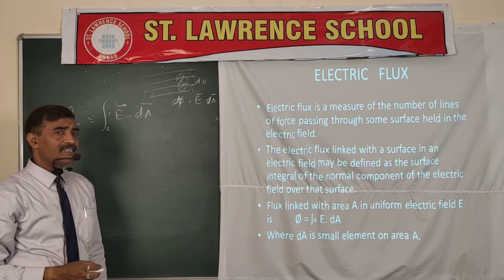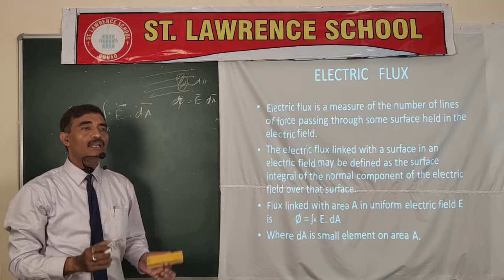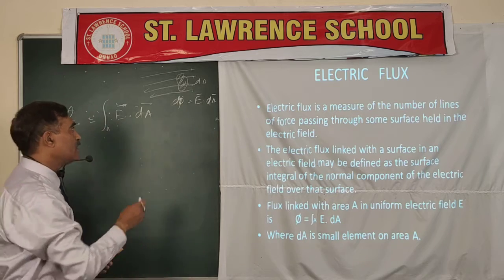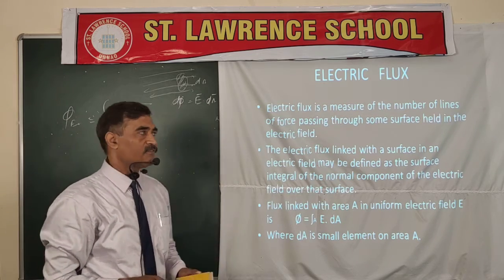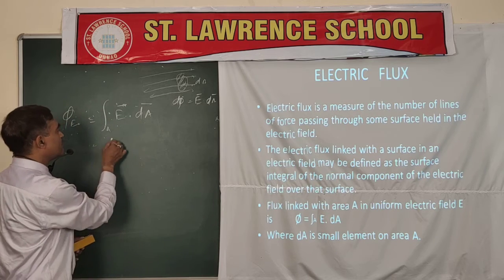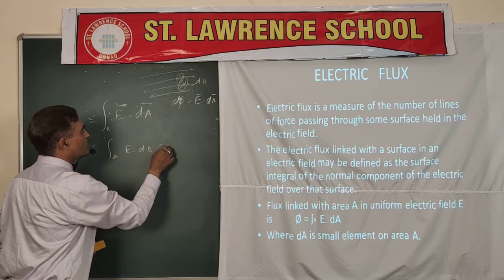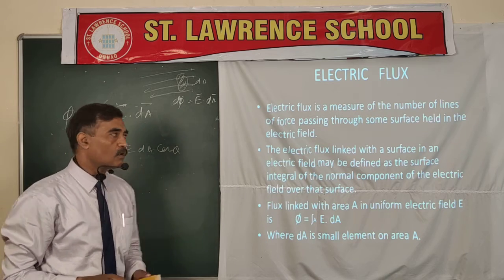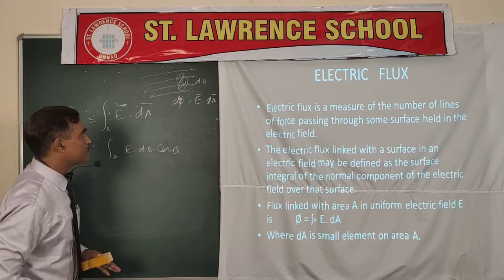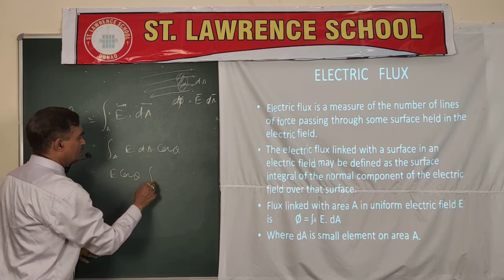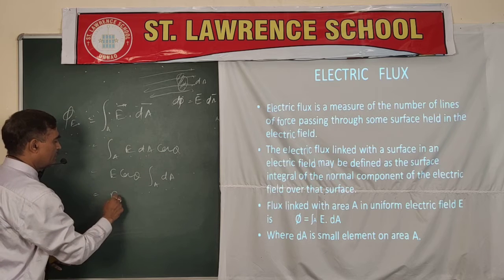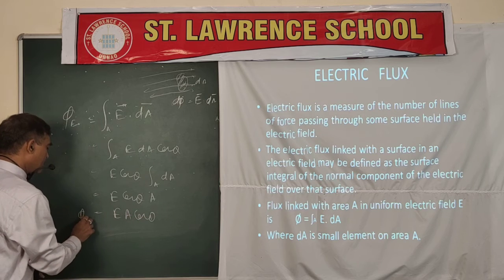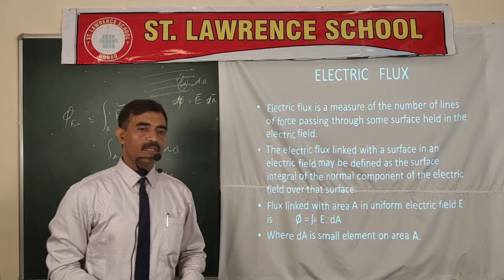To calculate the flux linked throughout the whole area, we integrate it. The total flux linked with the whole surface is the surface integral of the electric field over that surface. If the angle between E and dA is theta, then it becomes E·dA·cosθ, since A dot B = AB·cosθ. So E dot dA = E·dA·cosθ, where theta is the angle between E and dA. This gives phi-E = E·A·cosθ — this is the formula we will use while solving numerical problems.